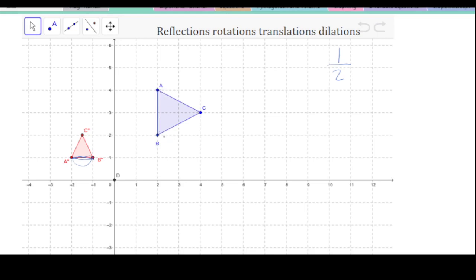And so if I dilate all of these by 1 half, that'll bring B here, because it goes from 2, 2 to 1, 1. This will go from 2, 4. Again, dilated by 1 half means divided by 2. So that'll turn into 1, 2.